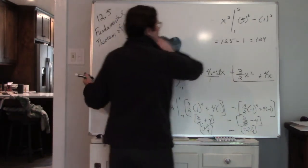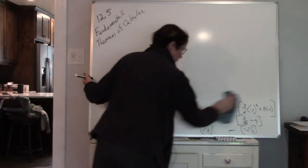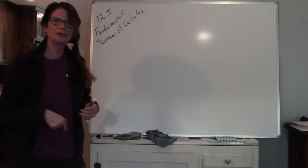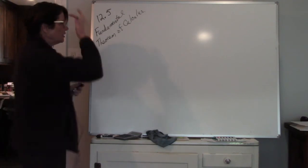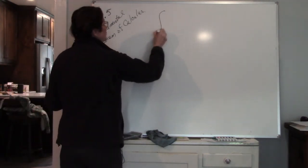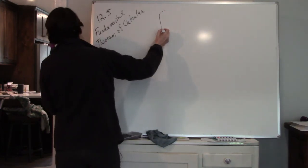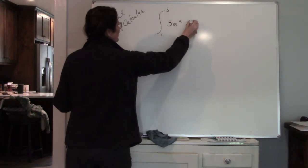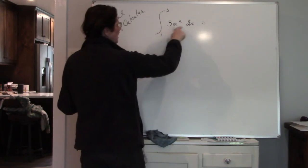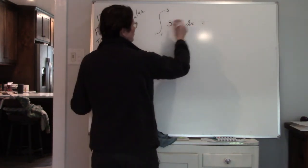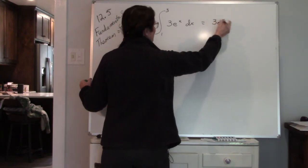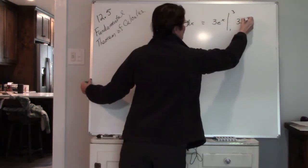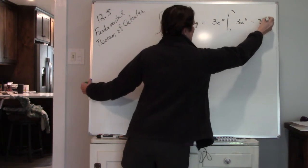So now let's try a couple of the specialty ones. Remember, your specialty types of functions are ln of x, e to the x, or the exponential function. We're going to stick with e to the x and ln of x. So I'm going to evaluate between 1 and 3 of 3e to the x power dx. The antiderivative of e to the x is e to the x. The 3 stays, so it's 3e to the x. And now I'm going to evaluate that between 1 and 3: so I'm going to plug in 3e to the third power minus 3e to the first power.